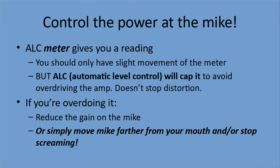Controlling the power at the mic: a good radio will have an ALC meter — audio level control. When you're talking, you should only have a slight movement of the meter. An ALC circuit will also cap it so you don't overdrive your amp, but if it is capping it, you're getting distortion, so don't count on it for everything. Keep the mic a fair distance from your mouth and don't scream. If you're overdoing it, you can reduce the gain on the mic — a lot of the better radios have some gain control on the microphone, though your little handheld might not. Check your manual for that, or simply move the mic farther from your mouth.